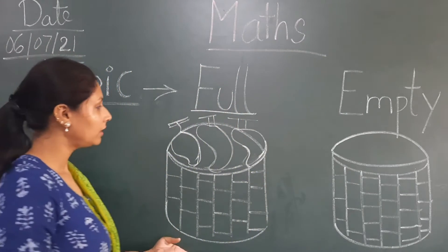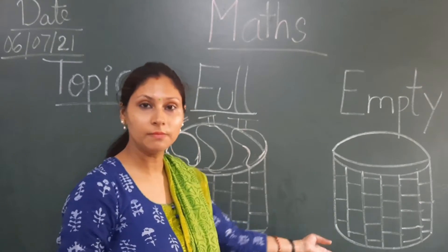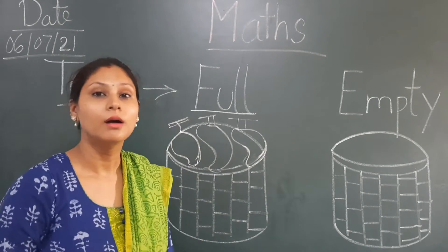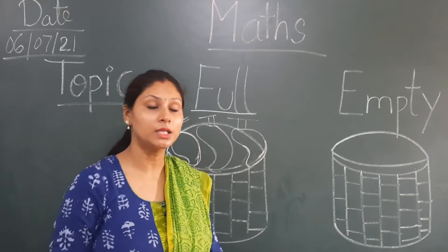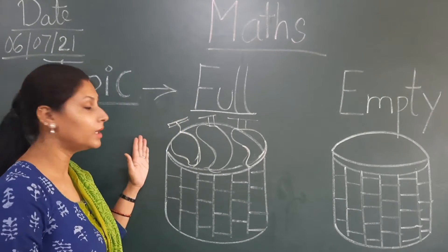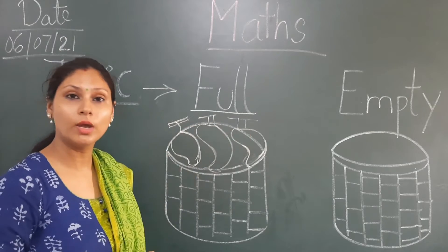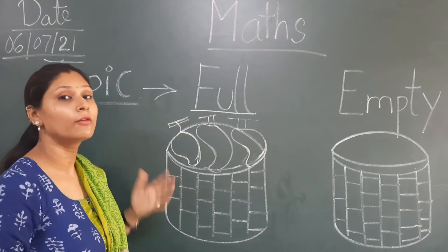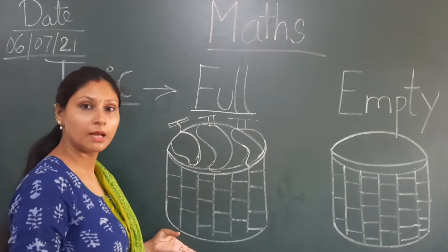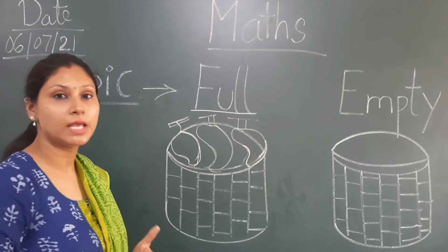Look at the board. Here I have drawn two baskets. You can see them. What is this? These are mangoes. Mangoes season is going on — summer is coming with different varieties of mangoes. This basket is full of mangoes. Look at this — there are mangoes and it is full of mangoes.